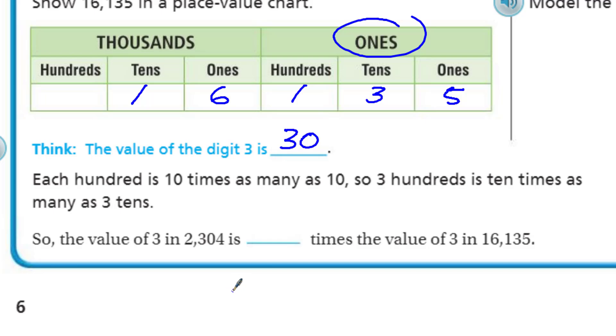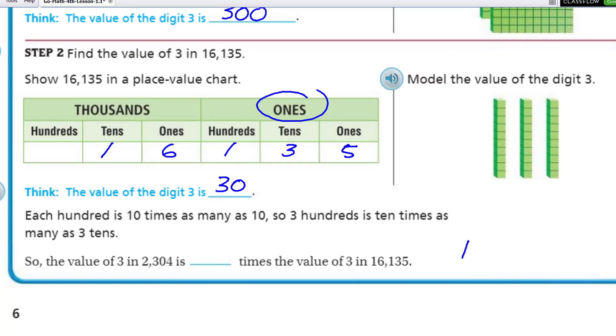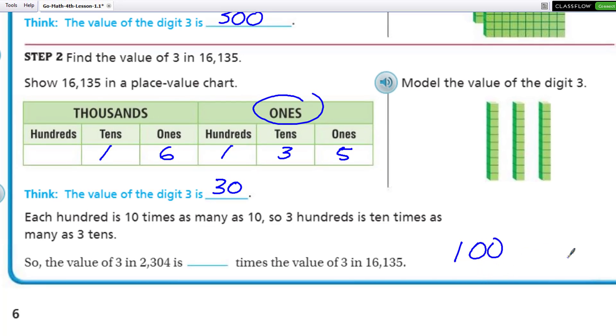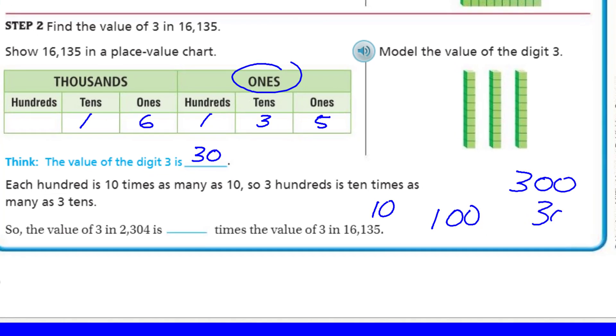Now it says each hundred is 10 times as many as 10. That's so true when you're writing numbers. We're just saying that each hundred is 10 times as many as 10. Because 300 is 10 times as many as 30. So the value of three in 2,304 is 10 times the value of three in 16,135.